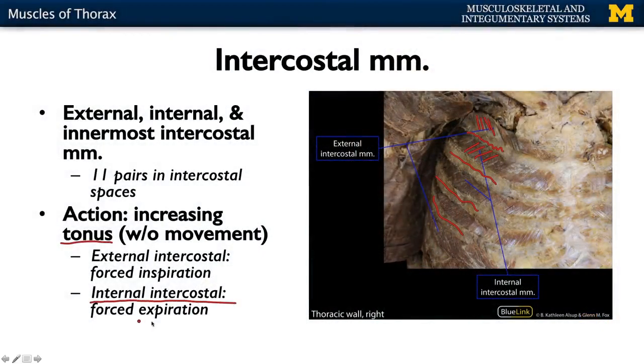In cases of forced inspiration — like taking a really deep breath — the external intercostals play a role. If you forcefully blow air out, that's forced expiration, and the internal intercostals play a role there. Typically, normal expiration is a passive movement driven by gravity, and normal inspiration is driven mainly by the diaphragm muscle, which we'll cover in another section.